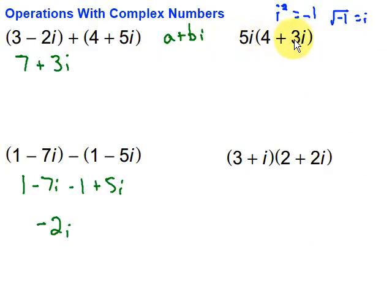5i times this quantity, 4 plus 3i. What we're going to do is distribute that 5i through. So it's going to be 5 times 4 is 20i. Then 5i times 3i is going to be plus 15i squared. Ooh, there's one of those i squareds that I said we need to look out for. Well, remember that i squared is just negative 1. So let me rewrite this as 20i plus 15 times negative 1.